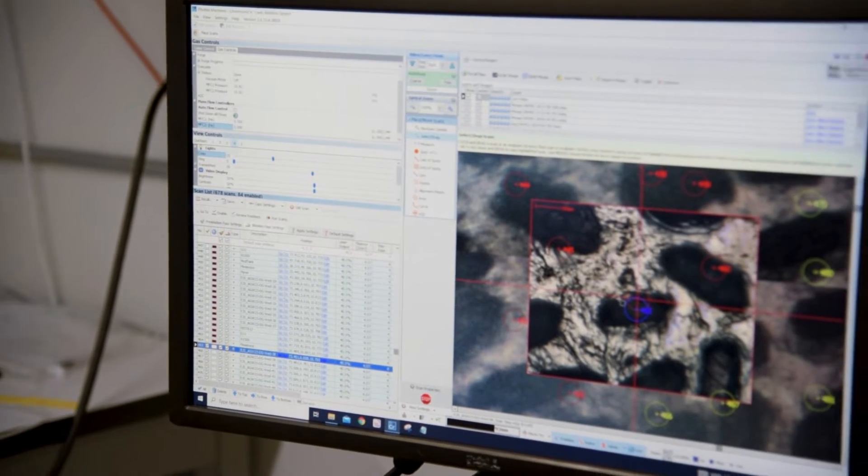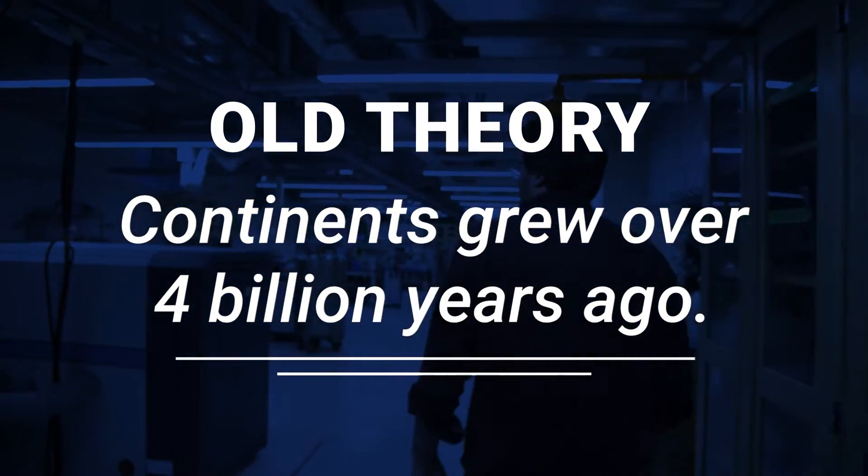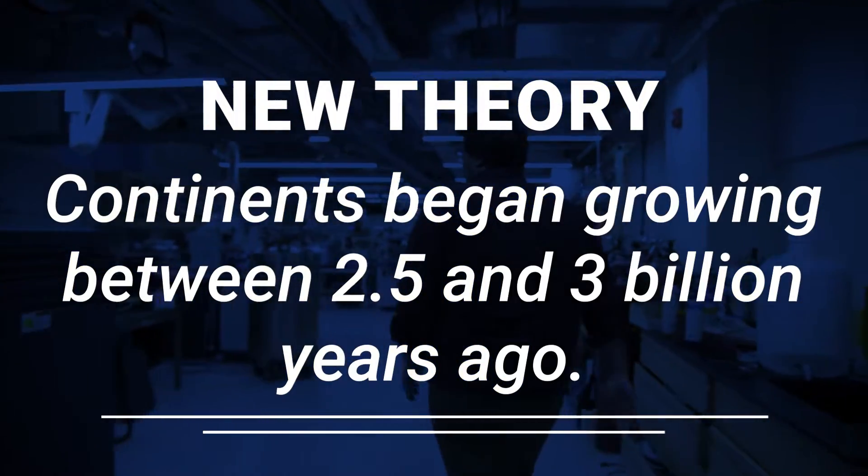Using an alternative technique involving the rock record with the help of an important dating tool, the mineral zircon, Reimink and his collaborators suggest that continents only began growing between 2.5 and 3 billion years ago, and that crustal growth was far more gradual than originally thought.